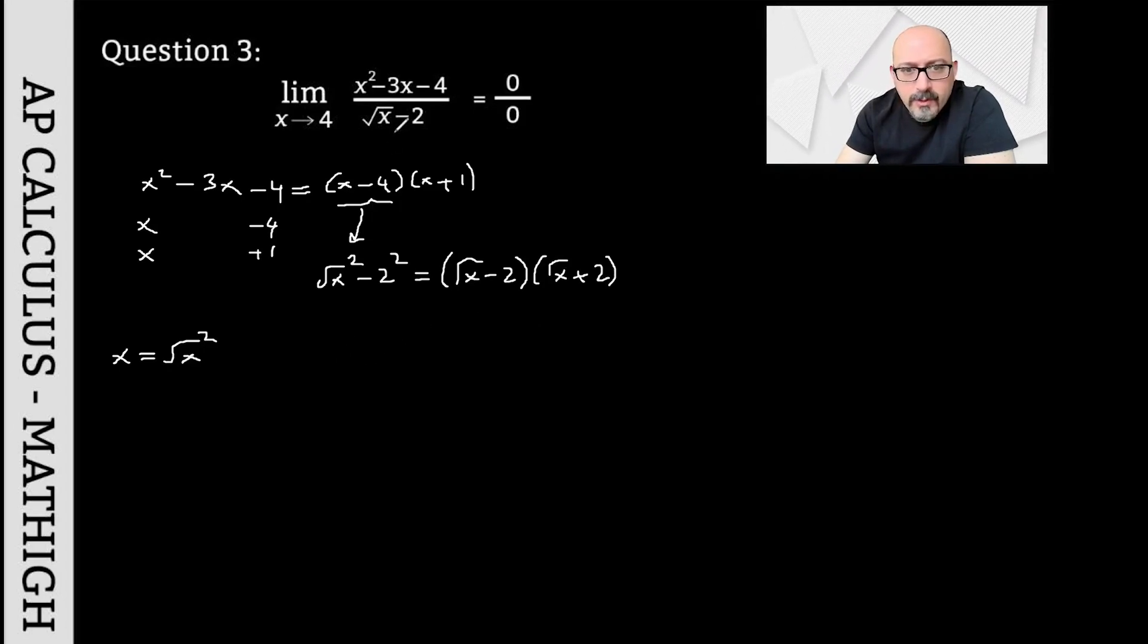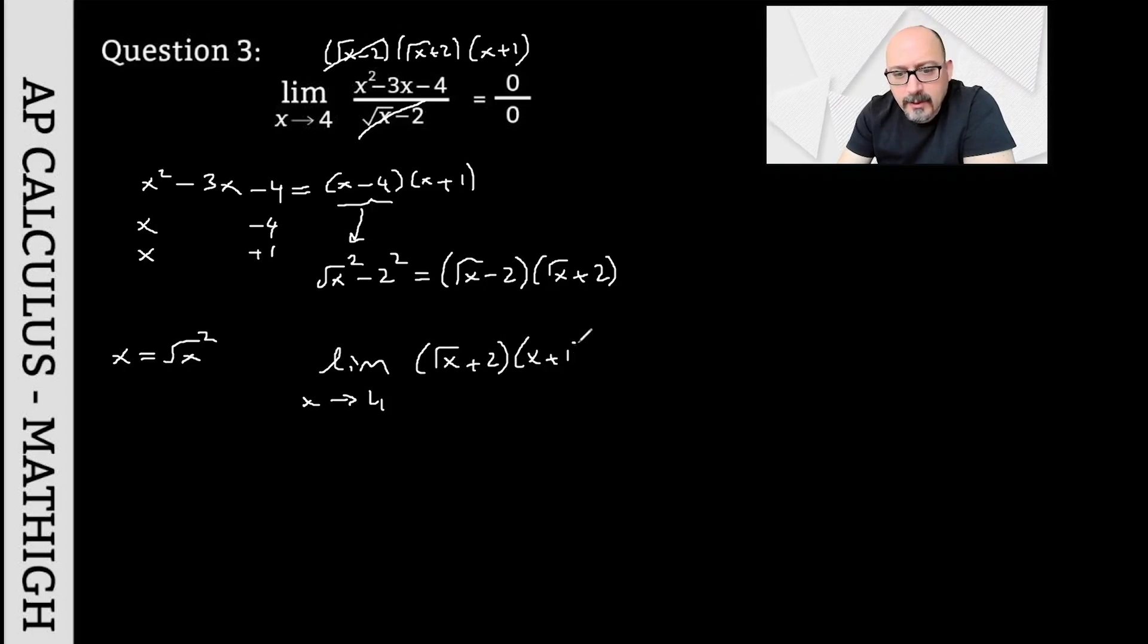So the upper part becomes (√x - 2) times (√x + 2) times (x+1). I simplified the (√x - 2) terms. As x approaches 4, the question simplifies to (√x + 2) times (x+1). Now, if I substitute 4 for x, my first factor is 4 and my second factor is 5. From here, we find that the answer to the question is 20.